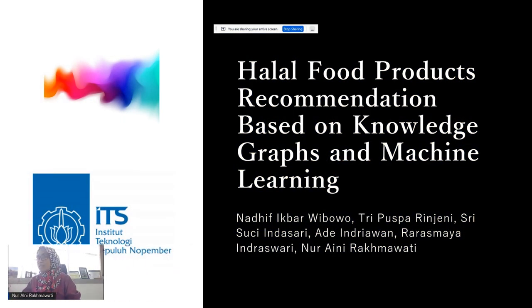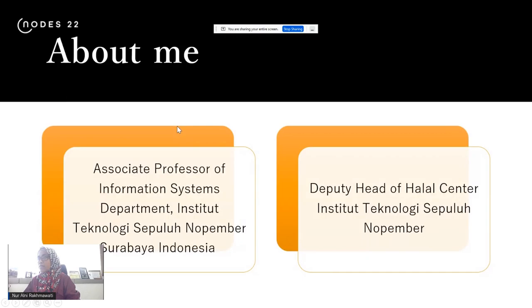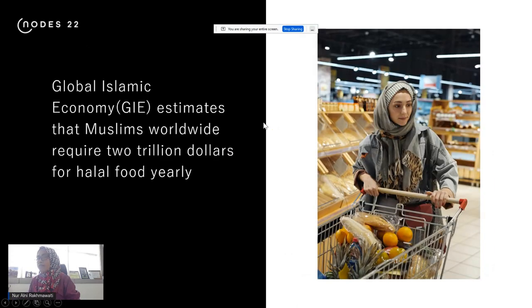Today I will talk about halal food product recommendation based on knowledge graphs and machine learning. This work is a team effort. What is interesting about halal food? The global Islamic economy reports that Muslims worldwide spend around 2.3 trillion dollars on halal food each year, so you can imagine how many people need to make sure that what they eat is halal every day.